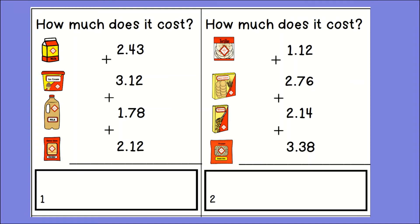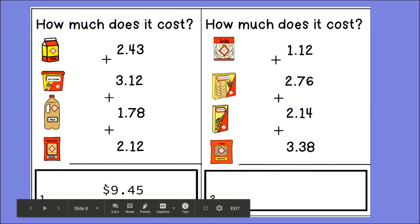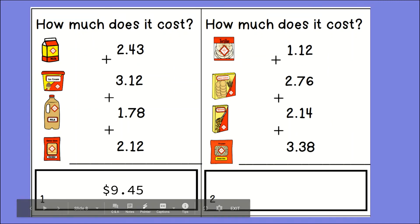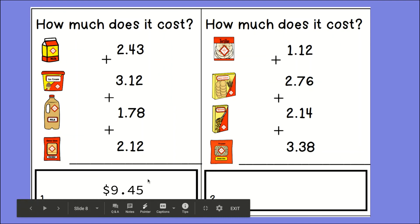Once you have the sum of two-forty-three plus three-twelve, click the addition sign and add one dollar and seventy-eight cents, then click equals. Push addition once more and add two dollars and twelve cents. When you add all four items, the total cost is nine dollars and forty-five cents. Using next dollar up, I look at the nine and ask what comes after nine — it's ten — so my next dollar up purchase is ten dollars.